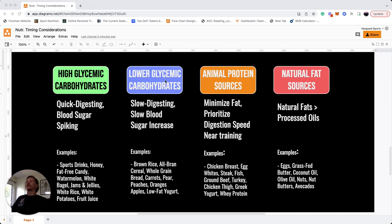Next are lower glycemic carbohydrates, and these are going to be the opposite of higher glycemic carbs. They're going to be slower digesting and result in a slow blood sugar release or gradual blood sugar increase. Some examples would be brown rice, all-bran cereal, whole-grain bread, carrots, pears, peaches, oranges, apples, and low-fat yogurt.